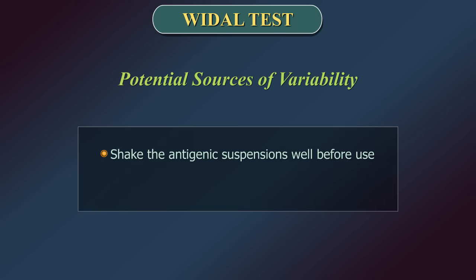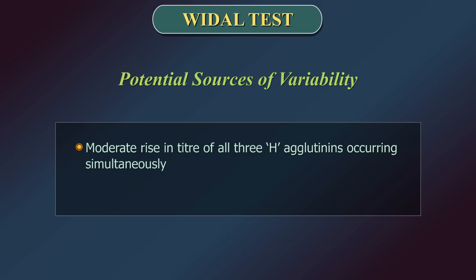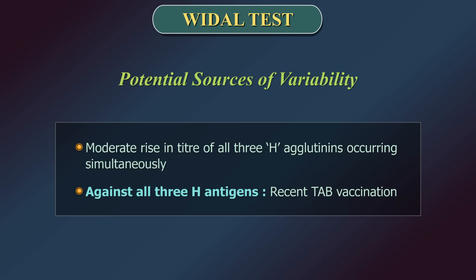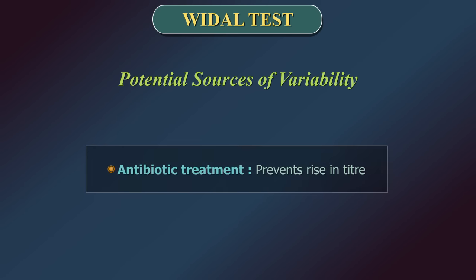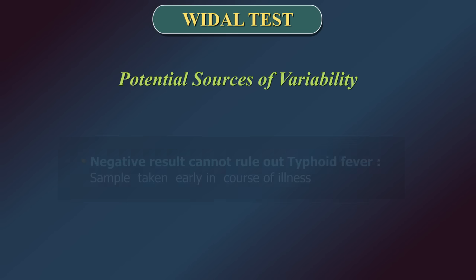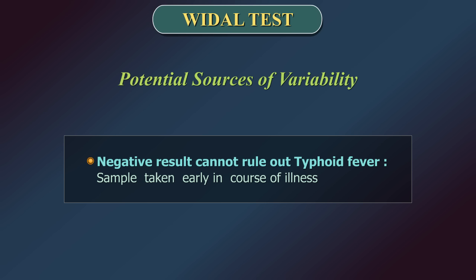Potential sources of variability: Shake antigenic suspensions well before use and ensure the suspension is homogeneous. A moderate rise in titer of all three H agglutinins occurring simultaneously against all three H antigens is suggestive of recent typhoid and paratyphoid vaccination. Antibiotic treatment prevents a rise in titer. A negative result cannot rule out typhoid fever if the sample was taken earlier than 7 days from onset, as antibodies have not yet reached detectable levels. Diagnosis is more definitively established from increasing titers of H and O antibodies in successive tests rather than from a single result.